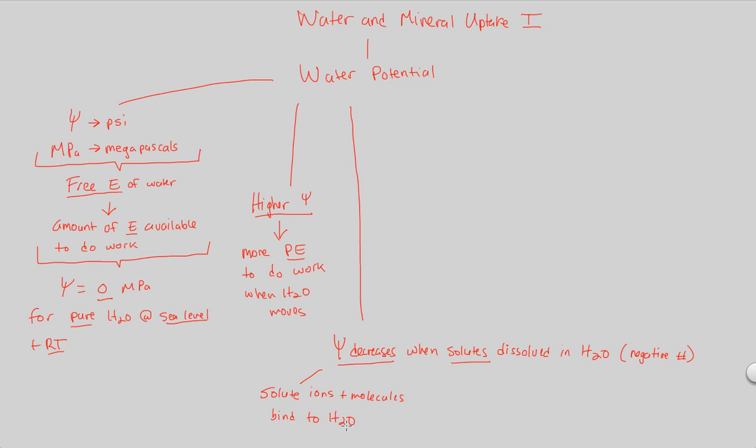H2O is a universal solvent. It's very good at binding things to it. And because you have this binding of solute ions to the once pure H2O molecules, this is going to do the following in terms of energy, capable energy, or potential energy. This reduces the motion of H2O molecules.